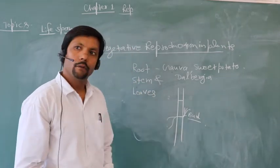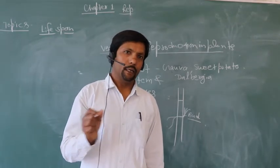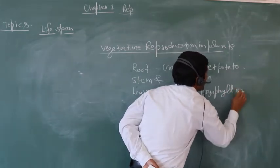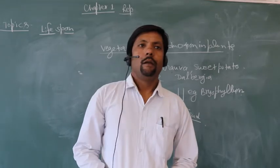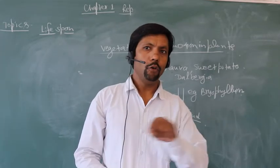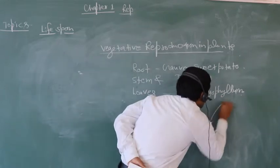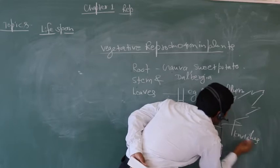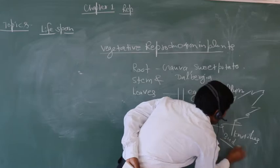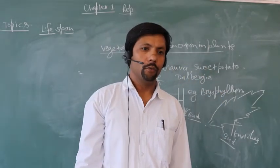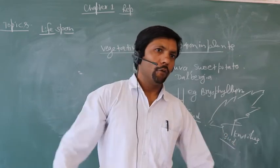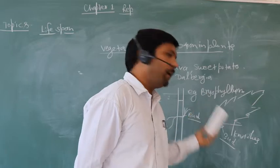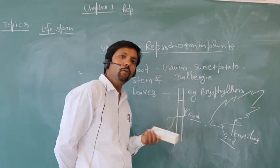The last vegetative part is leaves. In class 10 you have seen the diagram of Bryophyllum, which has leaf notches, and each notch has a bud. After maturity of the leaves, these buds grow into new plants, and if they fall into soil, the roots merge into the soil and a new plant develops. These are different parts of the plant that grow into new plants without formation of any gametes.